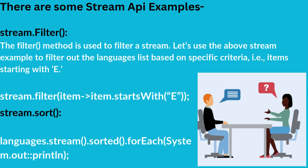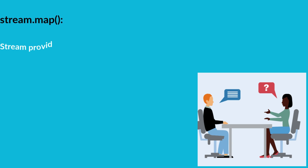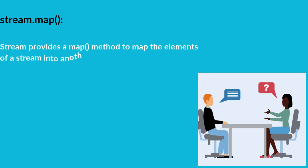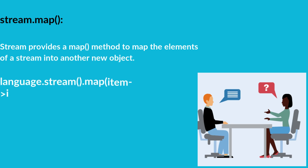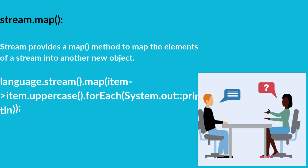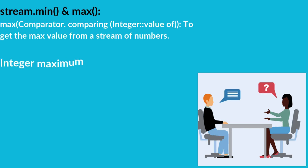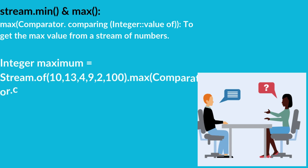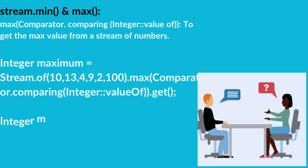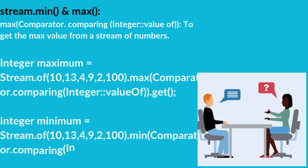There are some Stream API examples: stream filter, stream sort, stream map, stream min, and stream max.